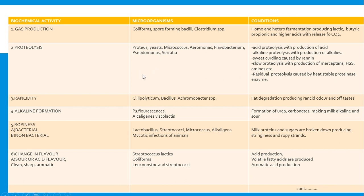Proteolysis is caused by Proteus, yeast, Micrococcus, Aeromonas, Flavobacterium, Pseudomonas, and Serratia. The conditions include acid proteolysis with production of acid, alkaline proteolysis where proteins are degraded into peptides which are then converted into amino acids, sweet curdling caused by renin for cheese preparation, slow proteolysis producing mercaptans and H2S amines, and residual proteolysis caused by heat-stable proteolytic enzymes.